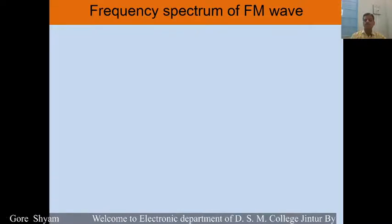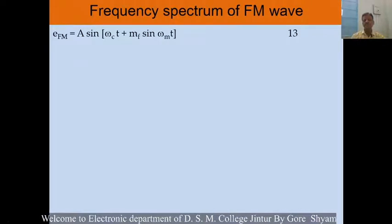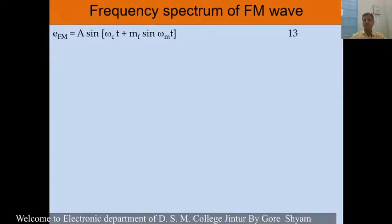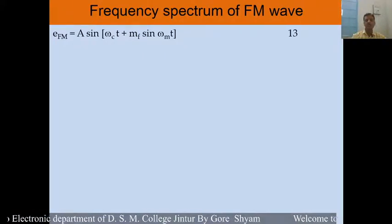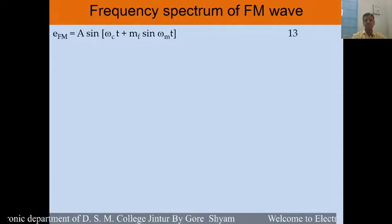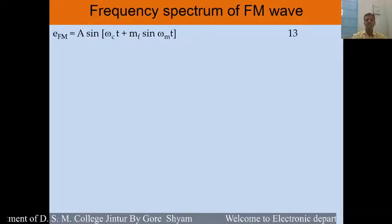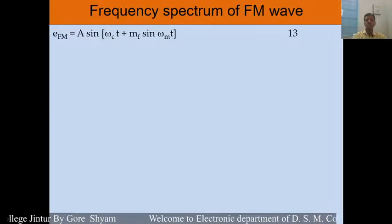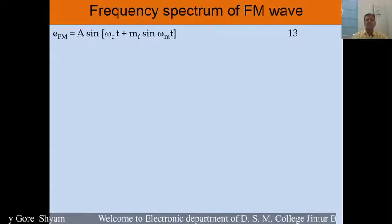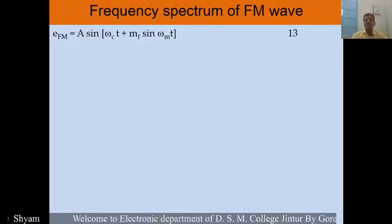In frequency modulation, the mathematical representation is like this. This is the mathematical equation for the frequency modulated carrier wave. Observing this equation, it is A(M) = A sin(ωc·t + Mf·sin(ωm·t)). This equation is a very complex equation.